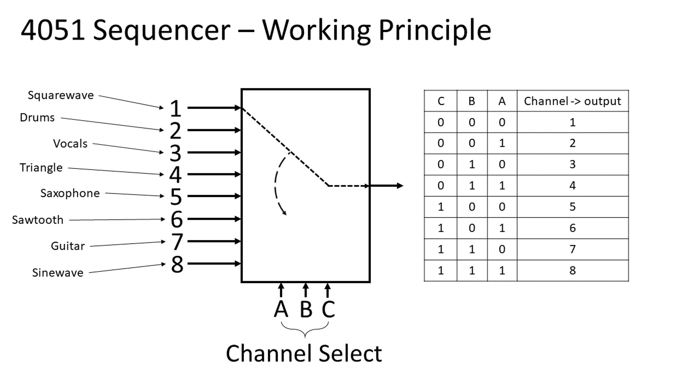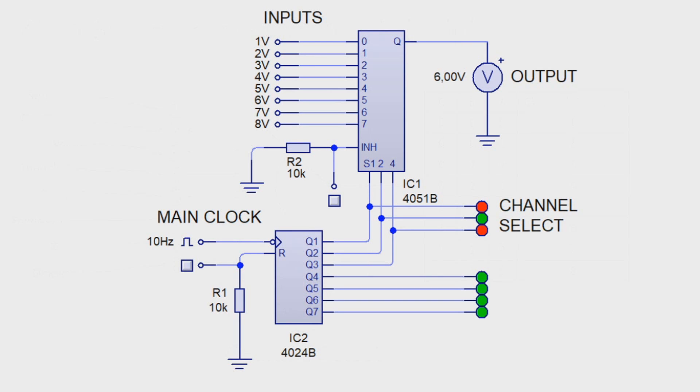The rate at which the channel switches is the rate at which the levels on the channel select pins change. But how can we make it so the sequence goes just simply from 1 to 8 and back? For that, we reintroduce our old friend the 4024 binary ripple counter.